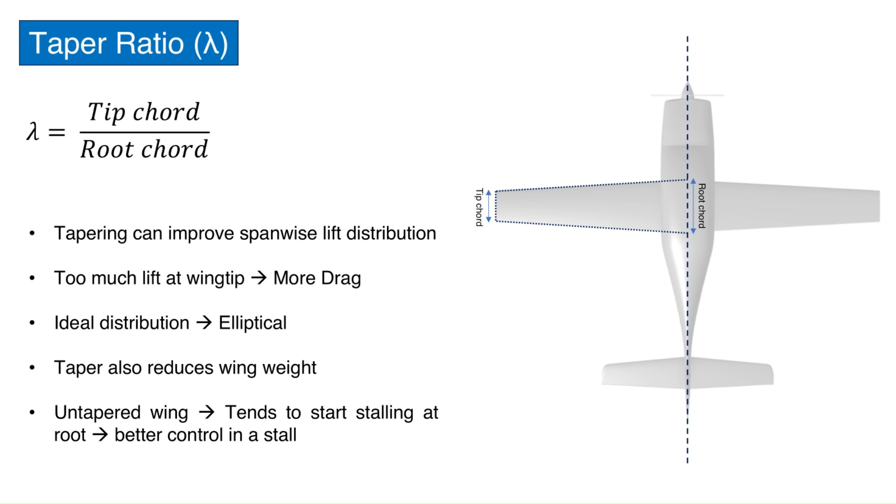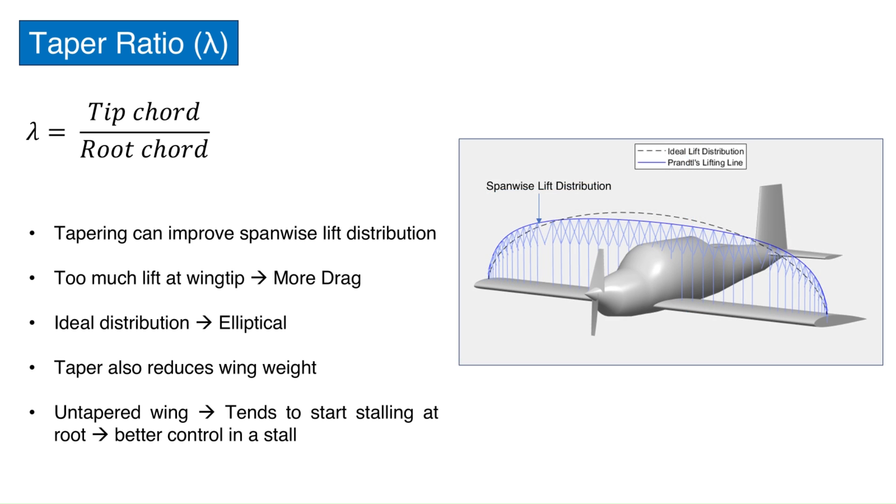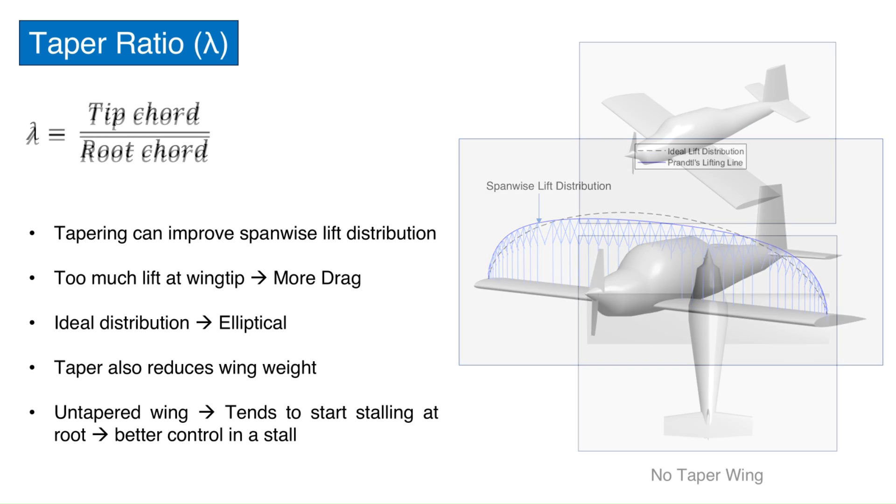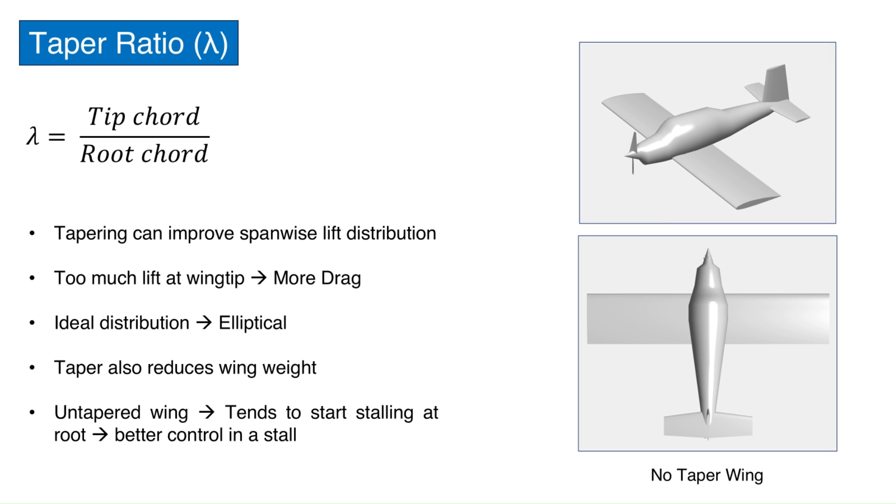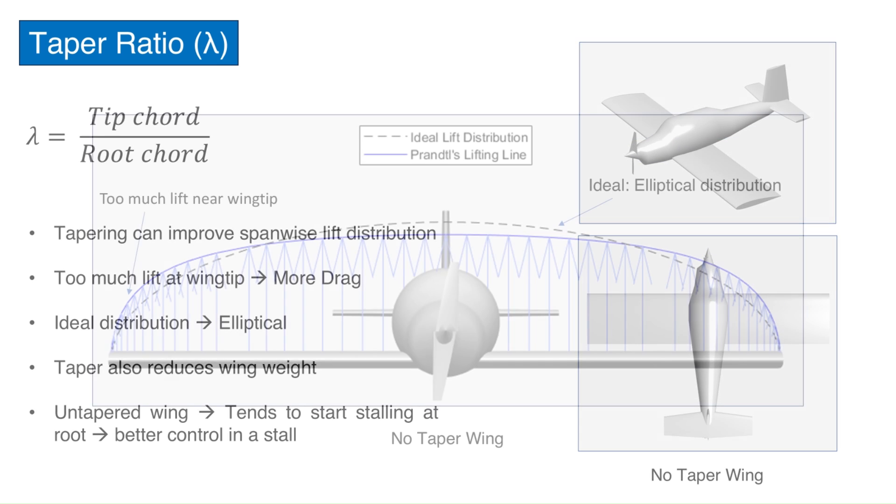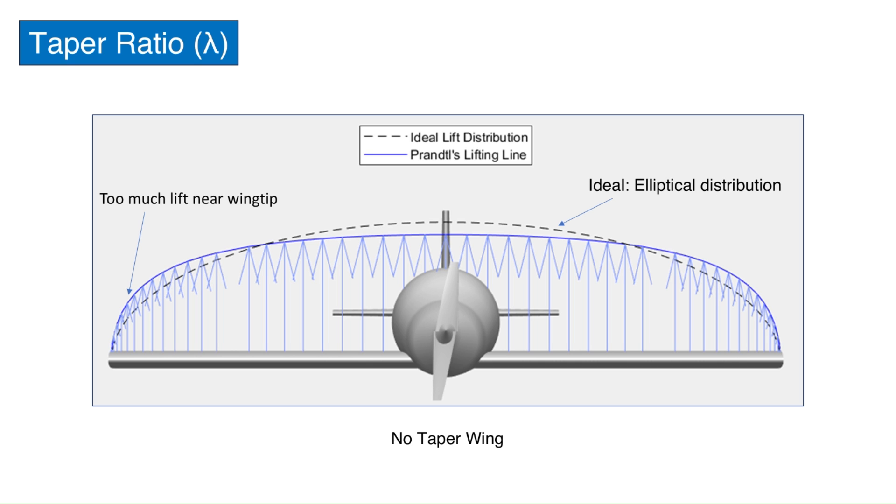Taper ratio. It is the ratio of the tip cord to the root cord of the wing. As mentioned earlier, the root cord is considered at the fuselage centerline. Tapering is done to change the spanwise lift distribution on the wing. Spanwise lift distribution simply means how much lift occurs at what spanwise location. If done properly, tapering can reduce drag. A wing with no taper has too much lift at the wingtips, which is bad in terms of drag due to lift. Ideally, we want the lift distribution to be elliptical because this gives the minimum drag due to lift value.